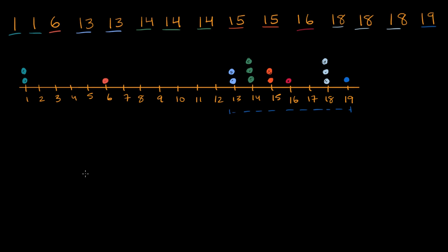If that all made sense to you so far, I encourage you to pause this video and try to work through it on your own — or I'll do it for you right now. So what's the median here? The median is the middle number. We have 15 numbers, so the middle number is going to be whatever number has seven on either side. That's going to be the eighth number.